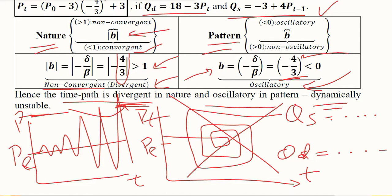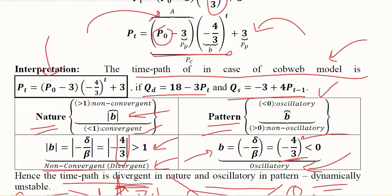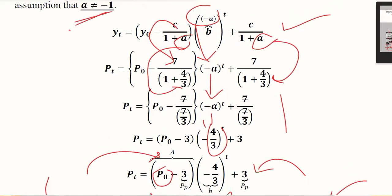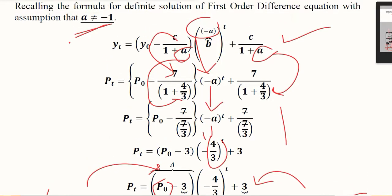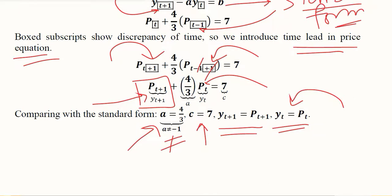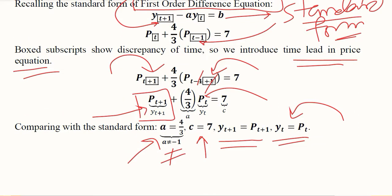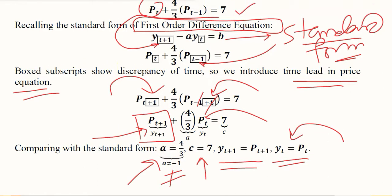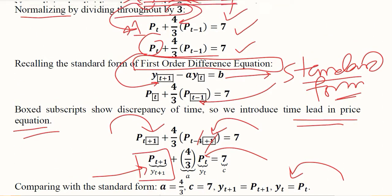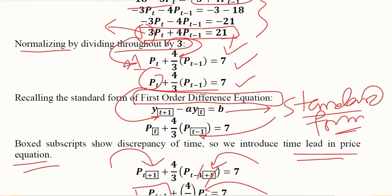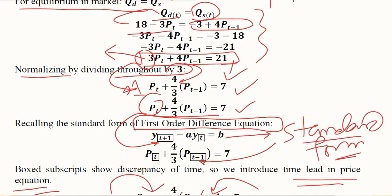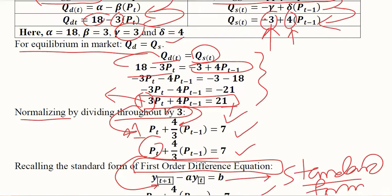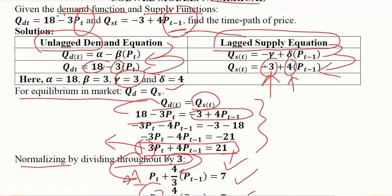This is how we can understand a given numerical example of a cobweb model simply by using the set of formulas that we developed before. This was the formula. This was the extraction of values as compared to the standard form and this is the standard form itself. This was the adjustment for the standard form and this was the equation that was developed on the basis of the market equilibrium condition Qd equals Qs. This was the elaboration of the given equations and this was the given data.